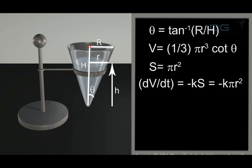So we get cot theta by 3 times pi r squared times dr/dt equals minus k pi r squared.